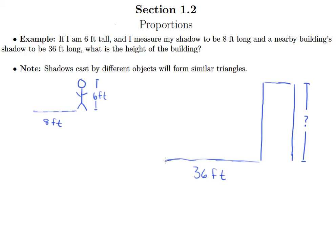So again, these two drawings are not to scale. But what we do see here is that if we connect the top of my head to the tip of my shadow, and we connect the top of the building to the tip of its shadow, we've got two triangles.